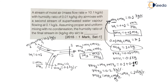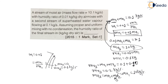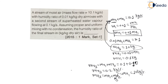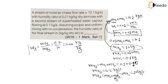Therefore, the specific humidity omega 3 at the exit = mass of vapor 3 divided by mass of air 3 = 0.2 divided by 10 = 0.02 kg per kg of dry air. So the answer to fill in the blank is 0.02, and you will get the full one mark. In the next lecture we will see one more numerical on this topic.